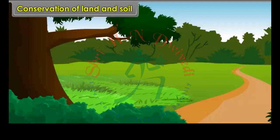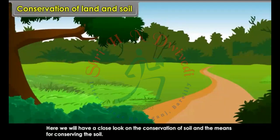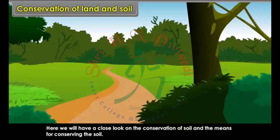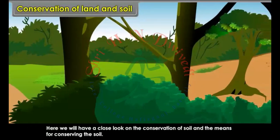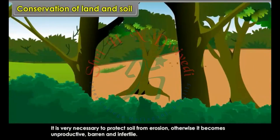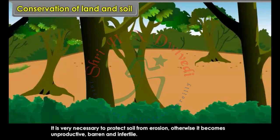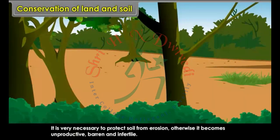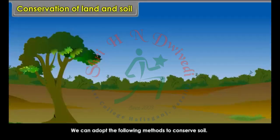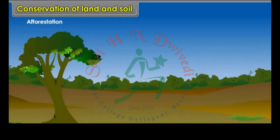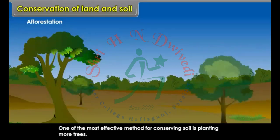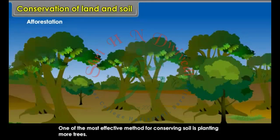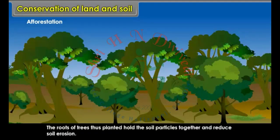Conservation of Land and Soil. We will have a close look at the conservation of soil and the means for conserving it. It is very necessary to protect soil from erosion; otherwise, it becomes unproductive, barren and infertile. We can adopt the following methods to conserve soil. Afforestation: one of the most effective methods for conserving soil is planting more trees. The roots of trees thus planted hold the soil particles together and reduce soil erosion.